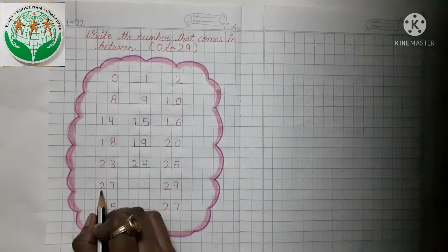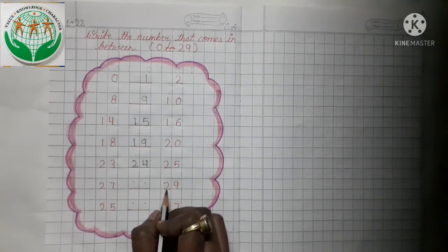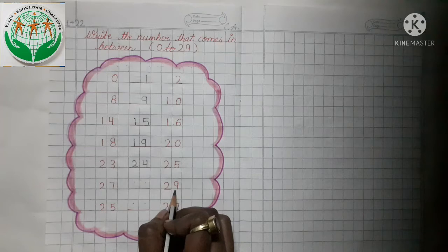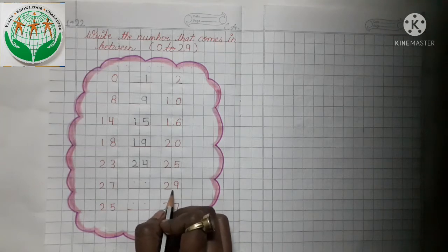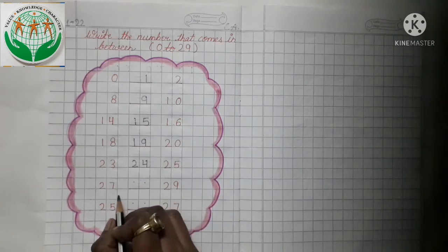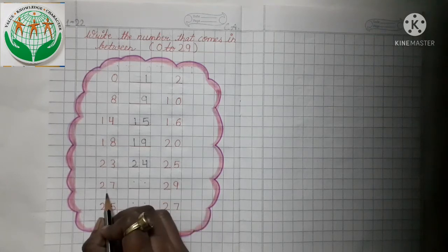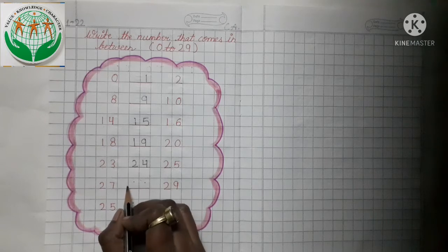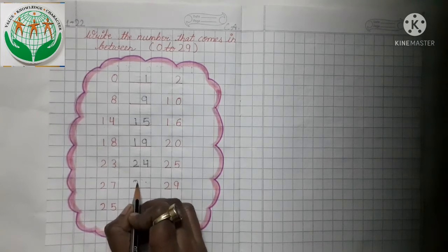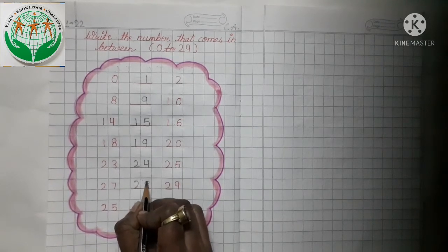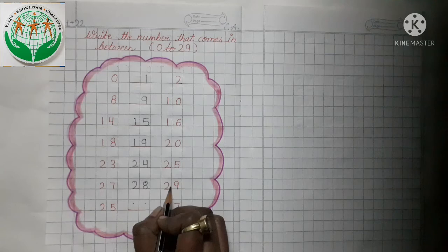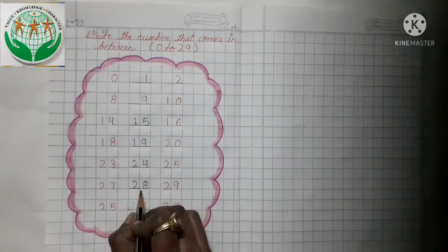This is number 27 and this is number 29. Now tell me what comes in between 27 and 29. Yes — 28. And 29. So 27 aur 29 ke bich mein kya aega? 28.